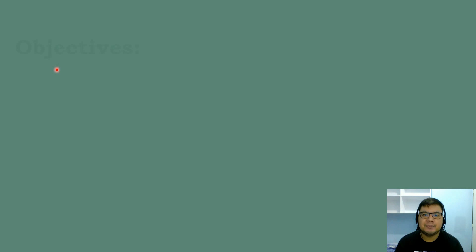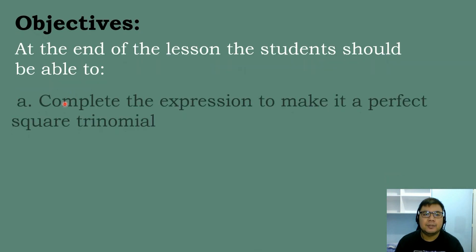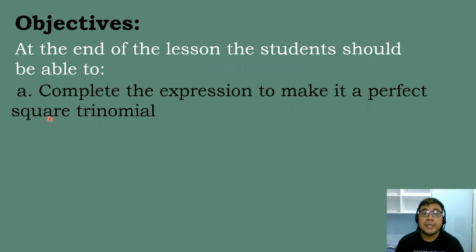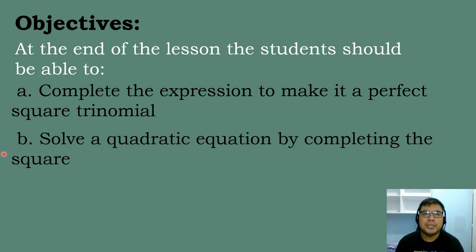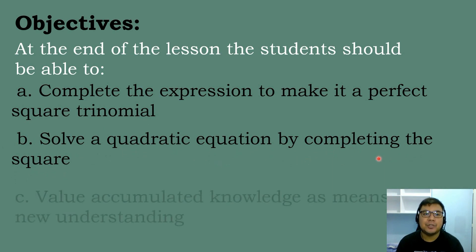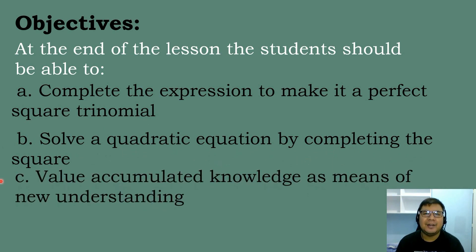Let's solve the following objectives for today's topic. Letter A: complete the expression to make it a perfect square trinomial. Letter B: solve a quadratic equation by using the completing the square method. And Letter C: value accumulated knowledge as means of new understanding.